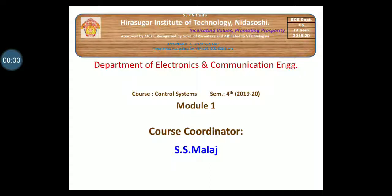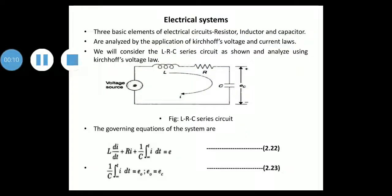Dear students, I will be continuing with the further part of module 1 on electrical systems. We have seen that the three basic elements of electrical circuits are resistor, inductor, and capacitor.